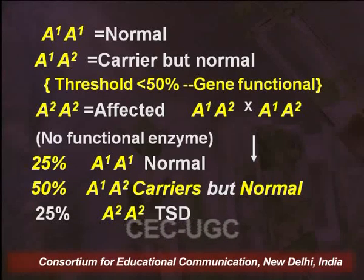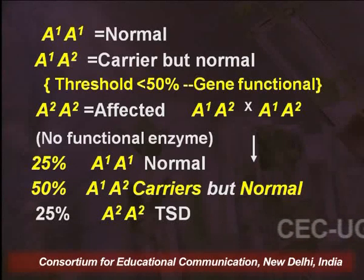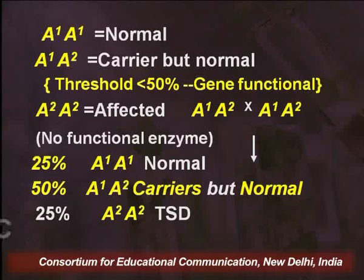This signifies that incomplete dominance holds a very important role in human life. One can also take the example of sickle cell anemia, but I chose to deal with that under codominance and multiple alleles, as it requires more time and detail. We will talk about sickle cell anemia in the next lecture as far as codominance and other characters are concerned. Thank you.